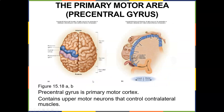For motor control, look at how much is dedicated to the hand. The opposable thumb gives us that fine motor control. So much of the primary motor cortex — the pre-central gyrus — is dedicated just to the hand, face, and tongue. The pre-central gyrus controls motor function; the post-central gyrus is for sensory.